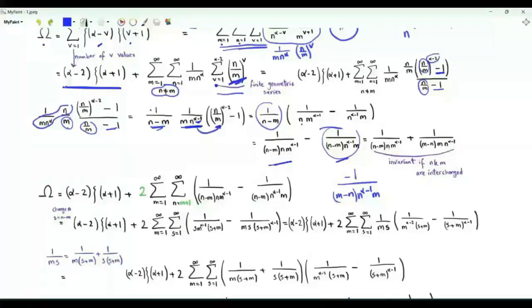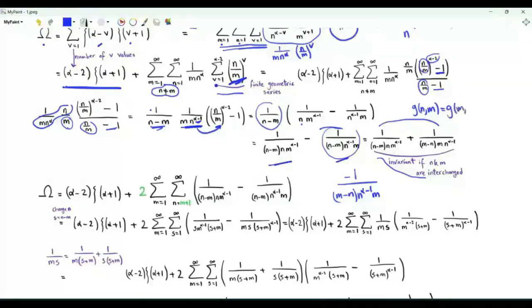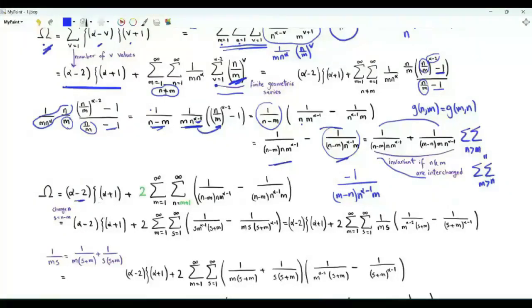In the double sum with respect to m and n, with n not equal to m, the sum is invariant if m and n are interchanged. If the sum of these two ratios is the function g of n and m, then it equals g of m and n. Doing the double sum with n greater than m gives exactly the same result as doing it with m greater than n. Based on this, we write omega as alpha minus 2 times zeta of alpha plus 1, plus 2 times the double sum with n greater than m, where m is from 1 to infinity and n from m plus 1 to infinity.